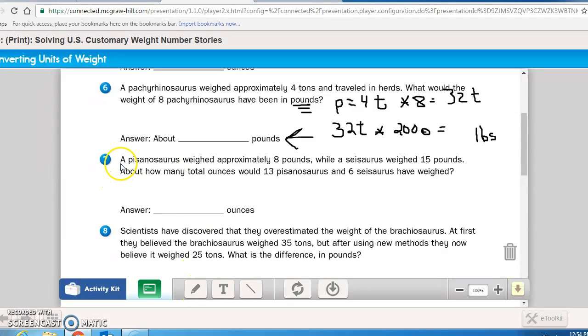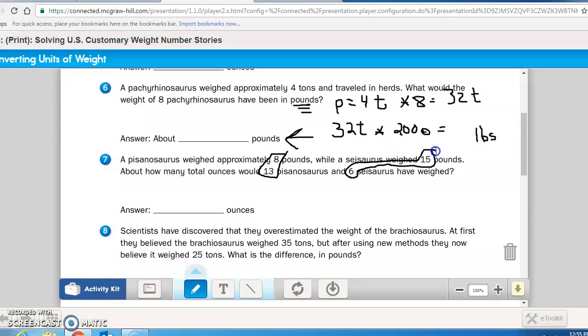The next one reads again, this dinosaur weighed approximately eight pounds, while a Cysosaurus weighed 15 pounds. About how many total ounces would 13 of the first dinosaur weigh, along with six of the Cysosaurus? So, you're putting these two numbers together, because that's what it said. It's going to be 13 of those, and it's going to be six of this one, and then you're going to add them together to come up with a total of pounds, but then I'm going to have to multiply it by 16 to get ounces. Pause the recording now, and do number seven.